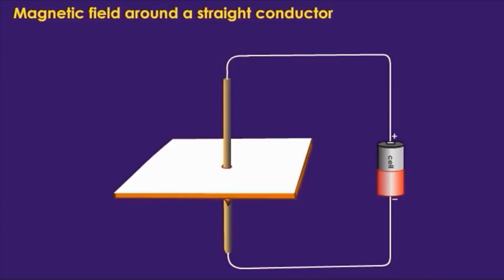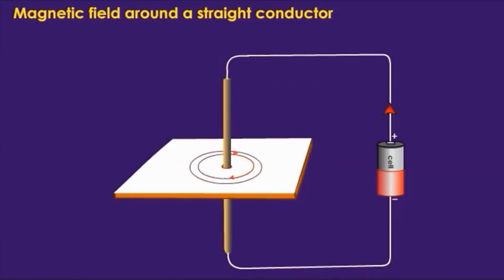Next, we want to look at the magnetic field around a straight conductor. In order for a conductor to behave as a magnet, there must be a charge or current flowing through it — that is why we call it a current-carrying conductor. We can use a compass to help draw the pattern of the magnetic field formed. It is observed that the lines of magnetic field form concentric circles. In this case, the direction of the magnetic field is clockwise.